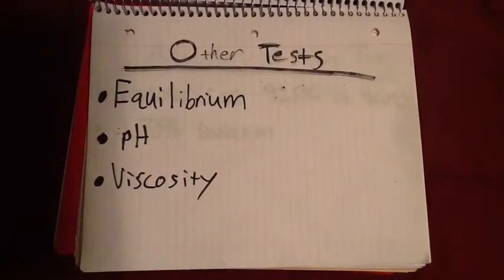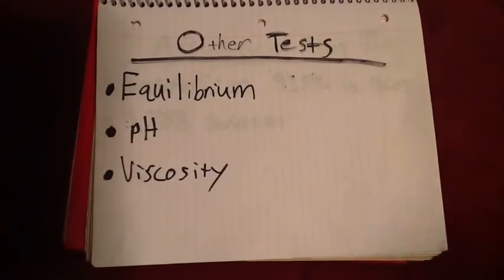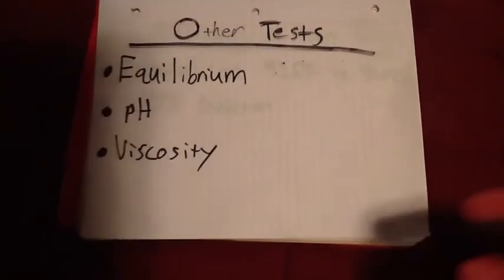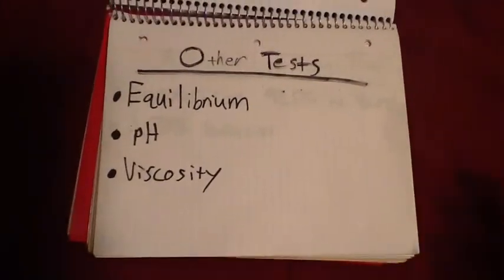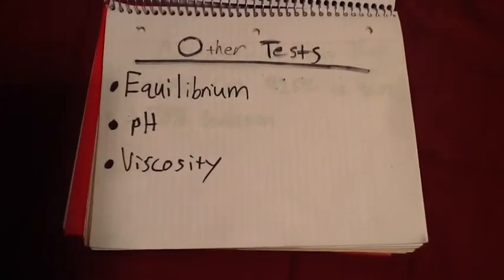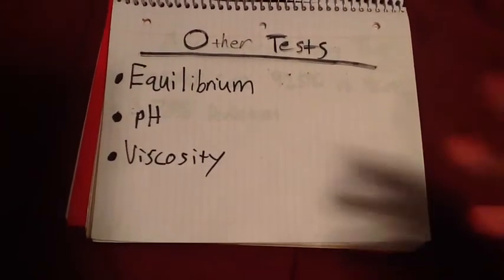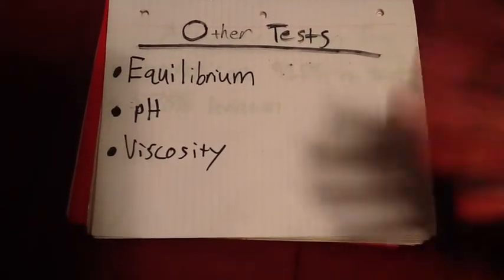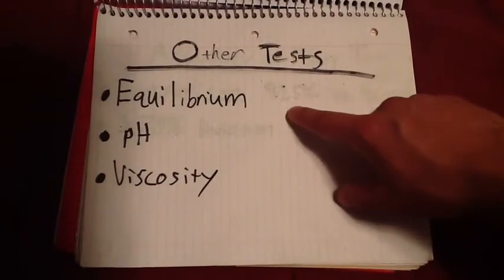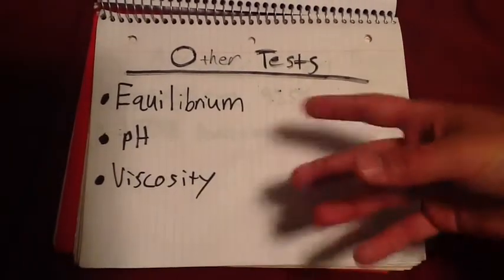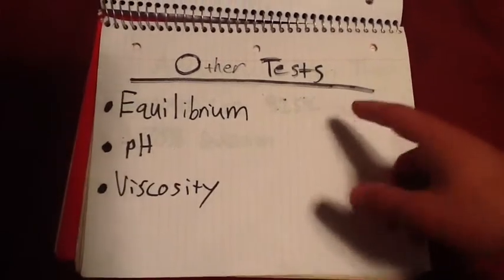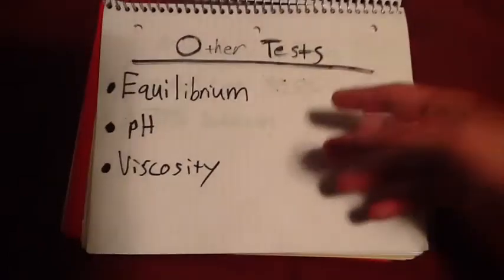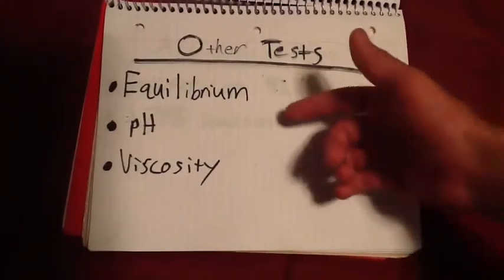The next question asks what other tests that we didn't use in this experiment could we use to determine the alum composition or if it's even alum at all. These are just some various tests that we could use, kind of a hypothesis. We could figure out from an equilibrium standpoint if this matches up with a baseline equilibrium that's already been calculated. We could use different molar concentrations of the alum in some sort of solution.